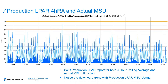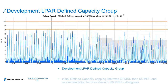This report shows the production ALPAR four-hour rolling average and actual MSU, broken out by individual ALPAR. Starting from January through to March 31st, you can see the trend of the four-hour rolling average is reducing and the actual MSU is reducing — there are a number of reasons which I'll point out as we move forward.